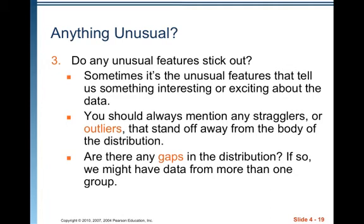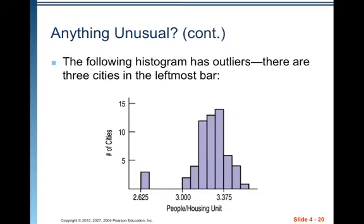Anything unusual — this is where outliers fit into the description. Sometimes it's the unusual features that tell us something really interesting about the data. You should always mention any stragglers or outliers that stand off away from the body of the distribution. Are there any gaps in the distribution? If so, we might have data from more than one group. The following histogram has outliers — there are three cities in the leftmost far end, really far away from the bulk of the data, so we call them outliers.